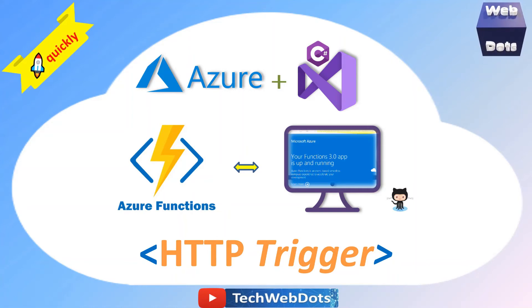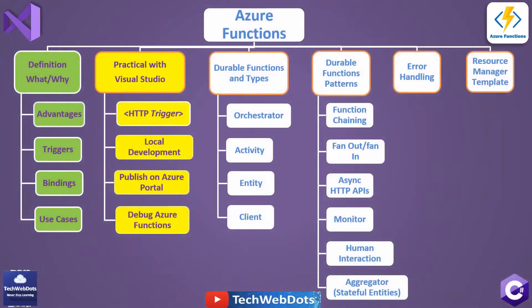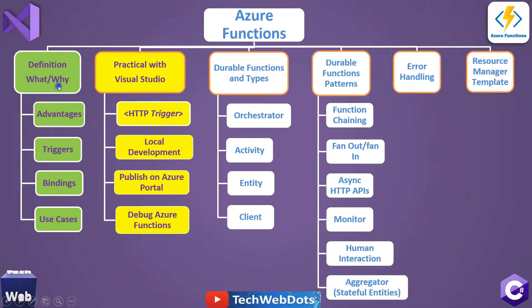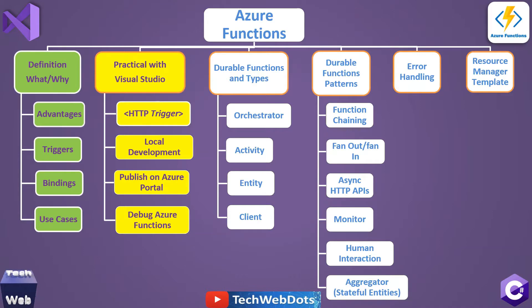Hello everyone, welcome to Tech Web Towards. Today I am going to discuss HTTP triggers, and this is the continuation part of our Azure Functions series. I already covered the green highlighted sections in my previous video — I strongly suggest you watch that one, the link is in the description. Today I will discuss HTTP triggers, their development, how to publish locally developed triggers to the Azure portal, and debugging options.